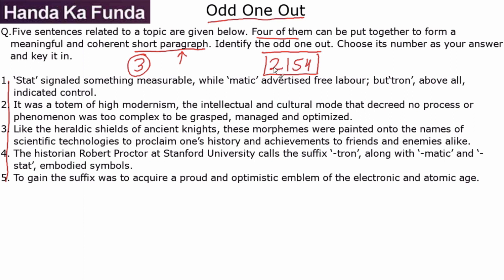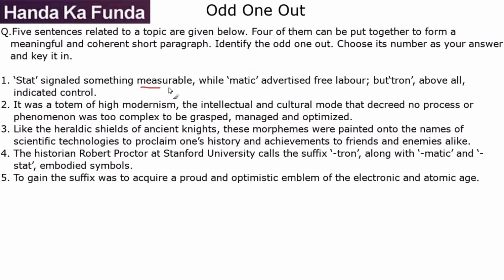Now let's look at this particular question. Sentence one reads: 'Start signaled something measurable, while matic advertised free labor, but tron above all indicated control.' So this looks like it is giving a description of these terms, which must have been introduced earlier in the paragraph. So sentence one, if it exists, must come after the introduction of these terms.